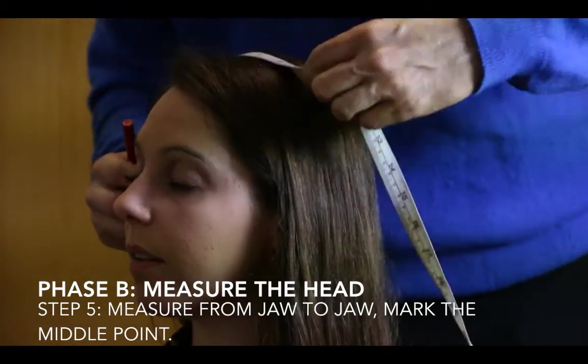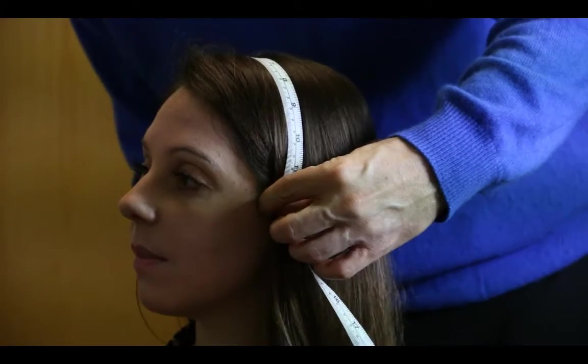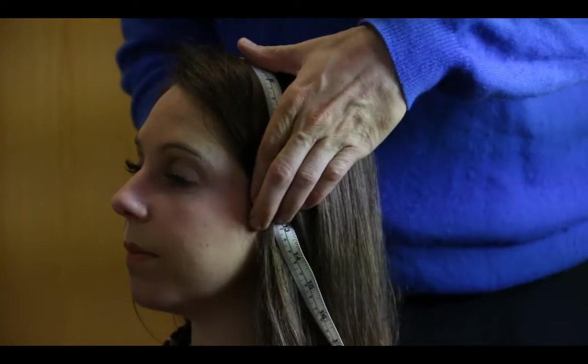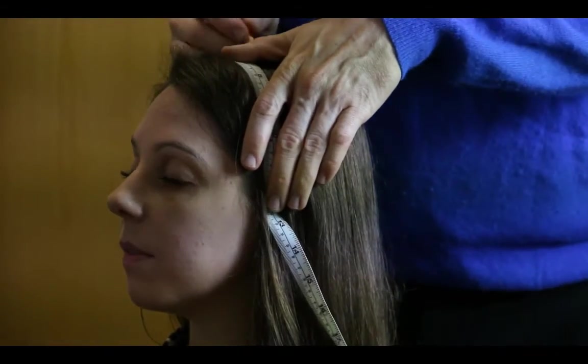Next, you're going to take some other measurements to find the exact center of the participant's head. First, measure from jawline to jawline. You may need to ask the participant to open and close their mouth so you can feel where the top of the jaw is. Once you've found the exact center, make a mark with a colored pencil.